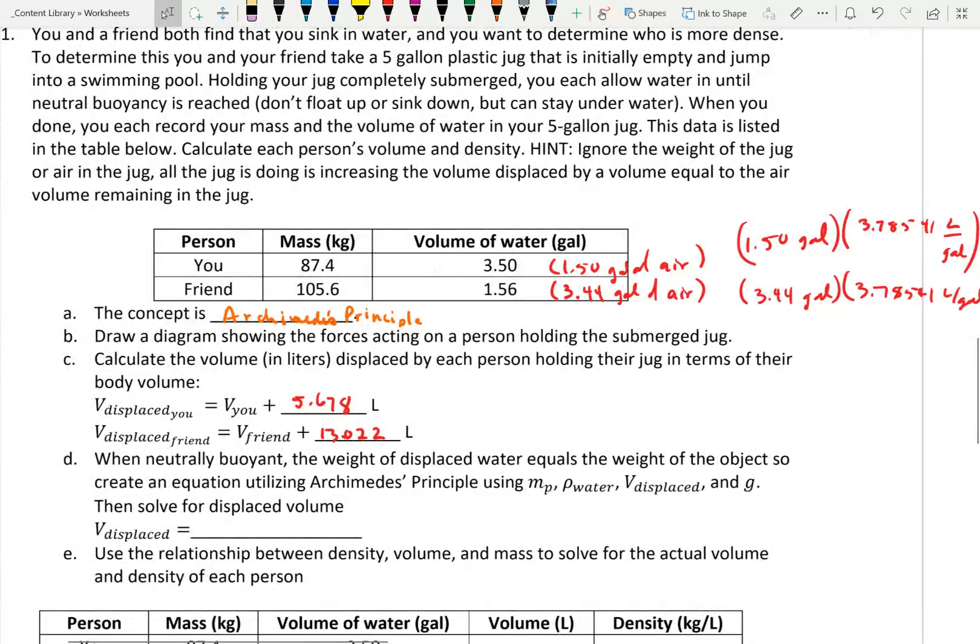Now the statement: when neutrally buoyant, the weight of displaced water equals the weight of the object. That is, you're in equilibrium, and sum of the forces is zero. Create an equation utilizing Archimedes' Principle using mass of the person, density of water, volume displaced, and g, then solve for the volume displaced.